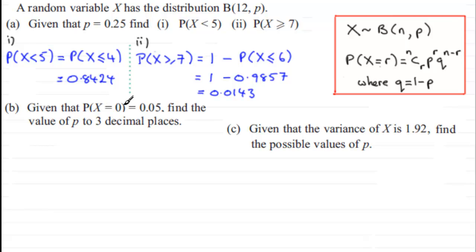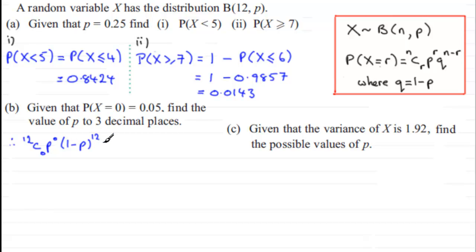For the probability X equals 0, we use r=0: that gives us 12C0 times P to the power 0 times (1 minus P) to the power 12. Now 12C0 equals 1 — anything C0 is always 1 — and P to the power 0 is also 1, since anything to the power 0 is 1. So what we're left with is simply (1 minus P) to the power 12.